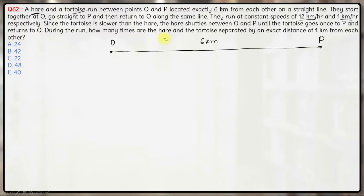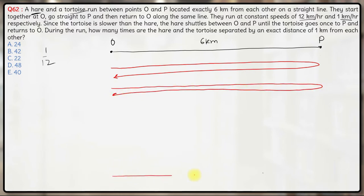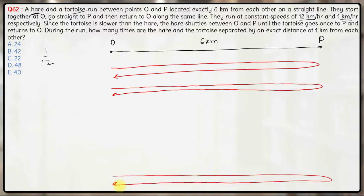Let's first see how many times the hare will complete this to-and-fro journey. The ratio of speeds is 1 to 12, so by the time the tortoise completes one to-and-fro journey, the hare will complete 12 to-and-fro journeys. So the hare goes 12 times back and forth while the tortoise goes once to P and back to O.